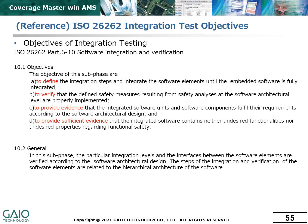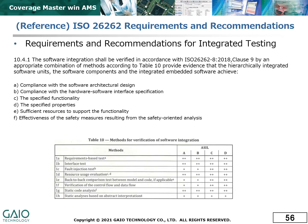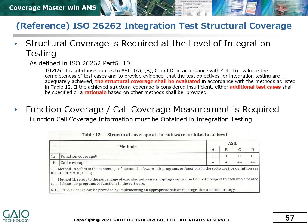According to ISO 26262, integration testing is for the purpose of verifying that the software fulfills the requirements of the design and to provide sufficient evidence of this. The requirements for integration testing in ISO 26262 are set out clearly. Evidence must be provided of compliance with the design, the specified functionality, properties and resources, and effective safety measures. As part of the integration testing, the ISO 26262 standard also requires that function coverage and call coverage be measured in order to evaluate the structural coverage.